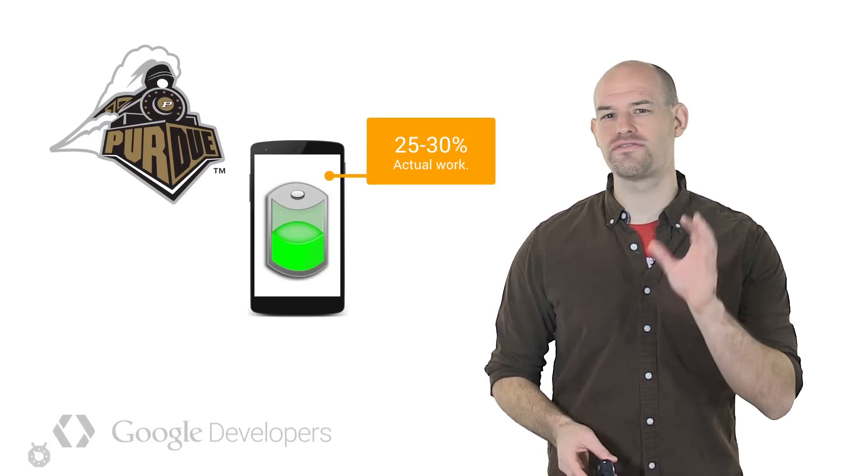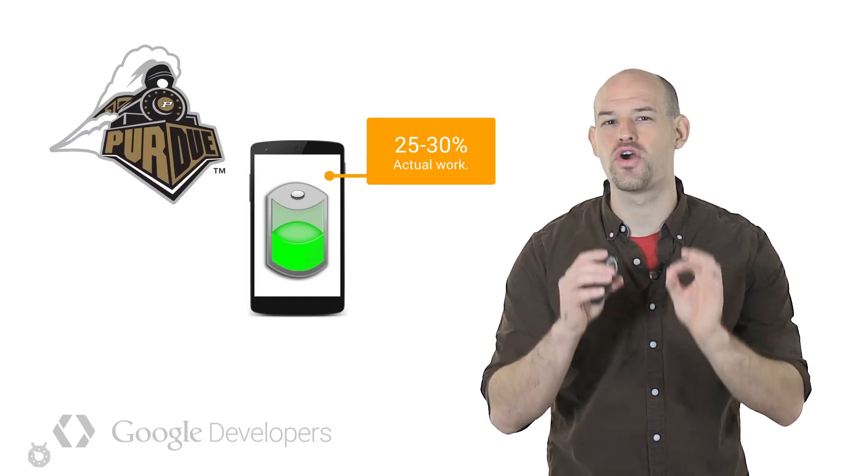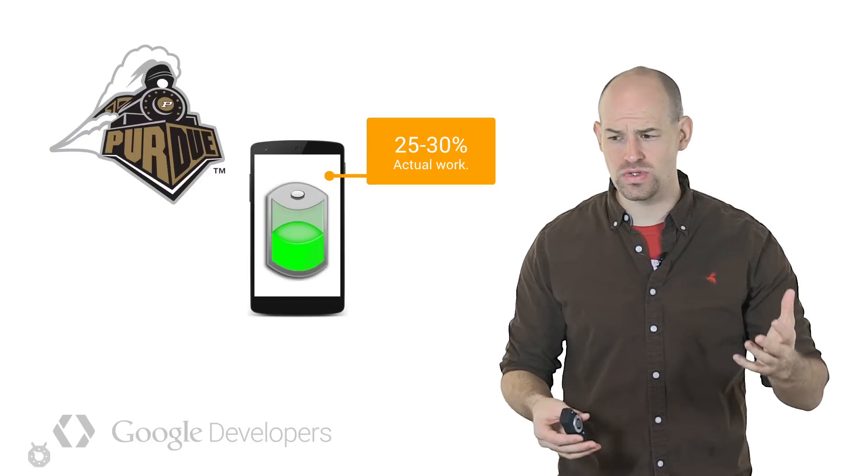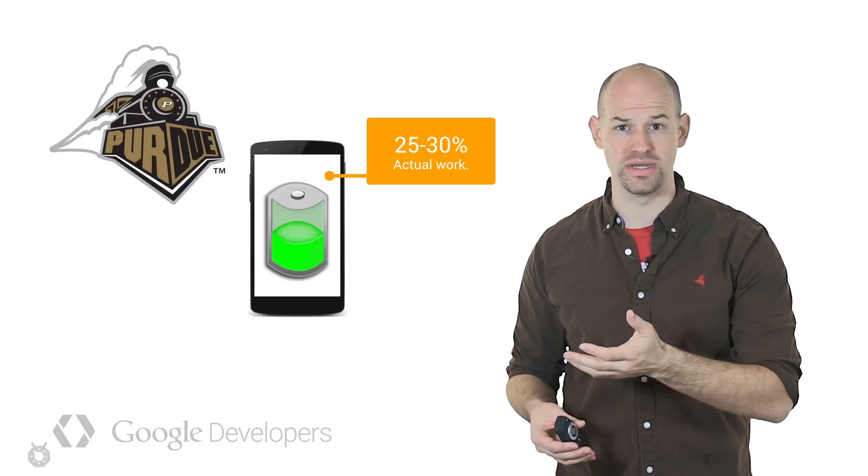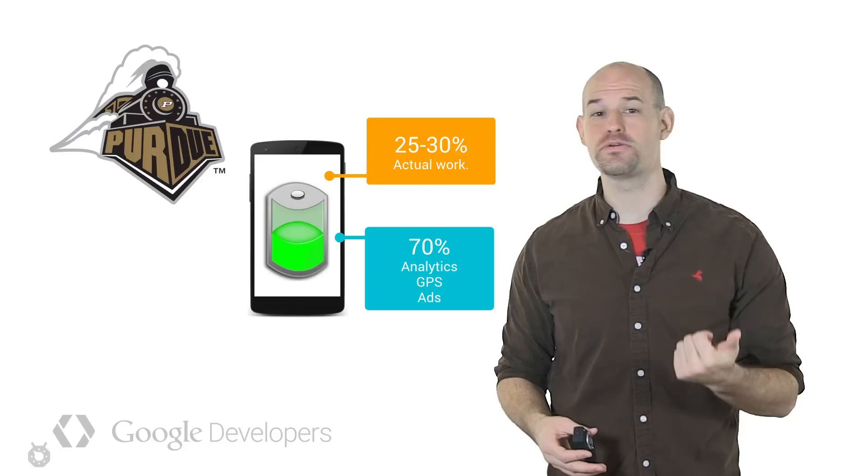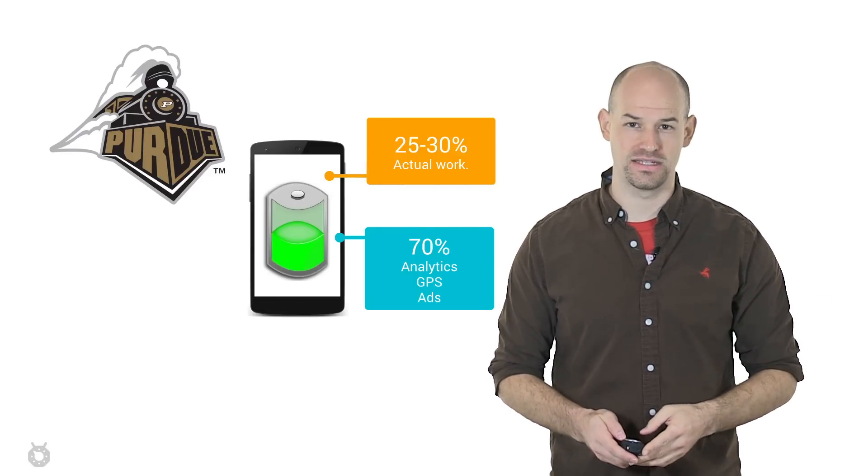On average, only about 25% to 30% of the battery used by these applications was dedicated to the core functions of the app, like drawing images, laying out news, or throwing birds across the screen. The other 75% completely eaten up by uploading analytics, checking location, and constantly pulling the server for ads to display.